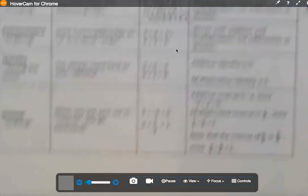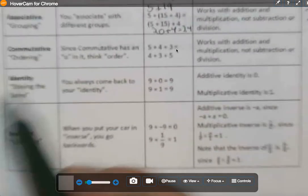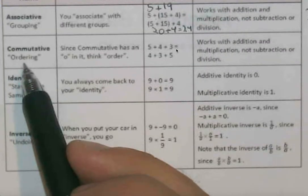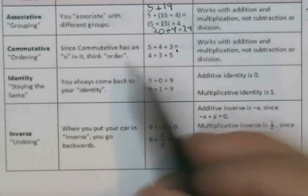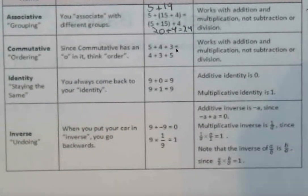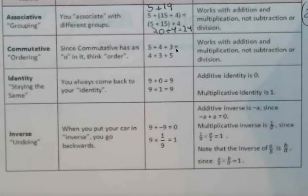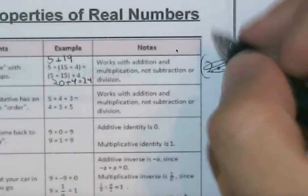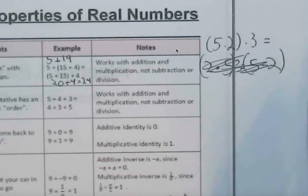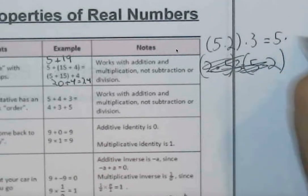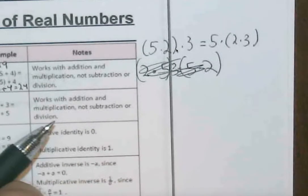If we take this further, we also see with the commutative property, this just deals with the ordering of this. So since commutative has an O in it, think of the order. And I guess this actually doesn't quite work. So it would be more so parentheses, and you would have to say times 3. Scratch this one. Start fresh. So this would have to be something along the lines of 5 times 2 times 3 in parentheses is the same as 5 multiplying with 2 times 3. That's better. So that would be dealing with the associative property.